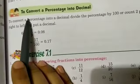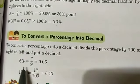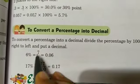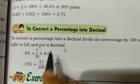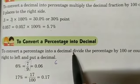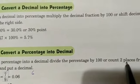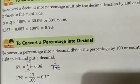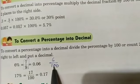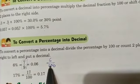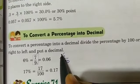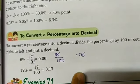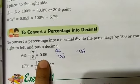The last topic is to convert a percentage into decimal. To convert a percentage into decimal, divide the percent by 100, or count two places from the right to the left and put the decimal. So for 6 percent: 6 by 100. There is only one digit, so we add a zero to make two places, giving 0.06.